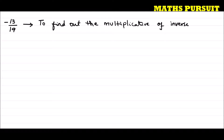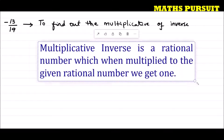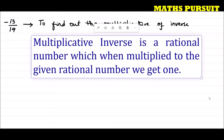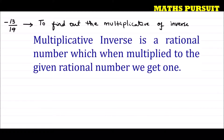Before trying to find out the multiplicative inverse of minus 13 upon 19, let us try to understand what multiplicative inverse means. I have posted the definition of multiplicative inverse here. The definition says that the multiplicative inverse is a rational number which, when multiplied to the given rational number, we get 1.